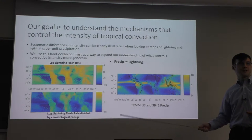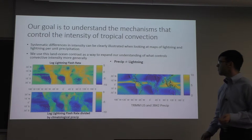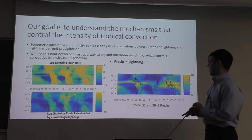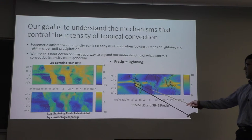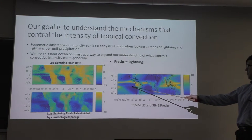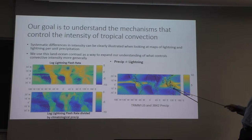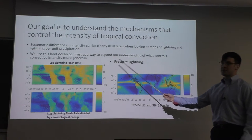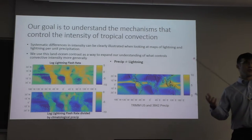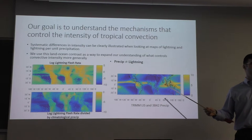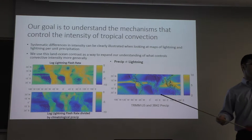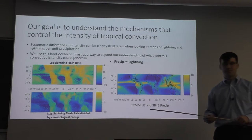The amount of precipitation is not equal to lightning. It's not just that there are more storms over land when there's more lightning — it's that there are stronger storms over land.